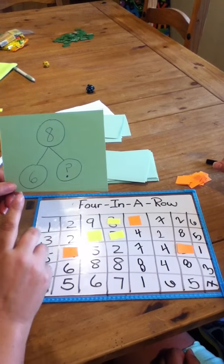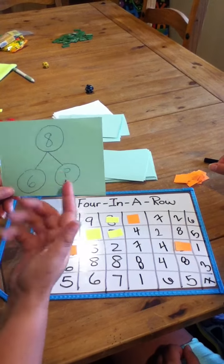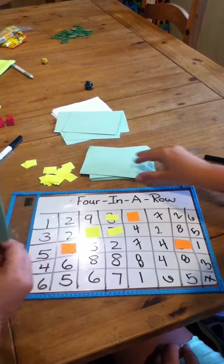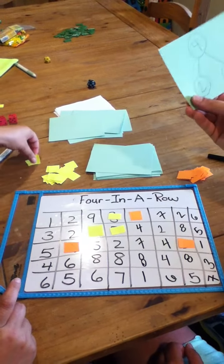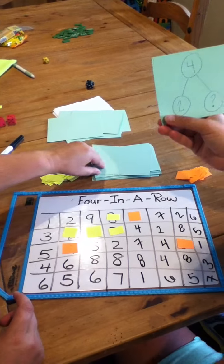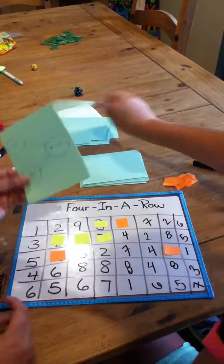Oh, I'm missing a part. So I know that six and what make eight? Six and two make eight. Four is my whole. So two plus two is four.